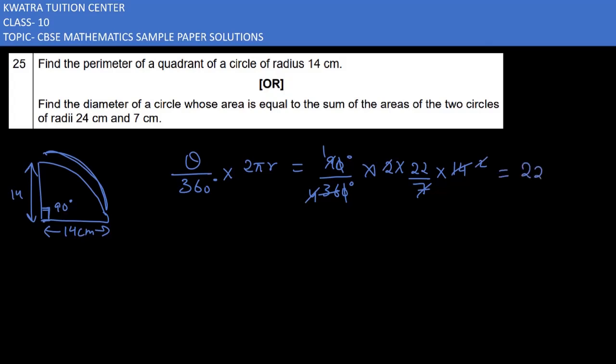So our arc length is 22 cm. To find the total perimeter, we add the arc length plus the two straight sides: 22 plus 14 plus 14. That gives 22 plus 28, which equals 50 cm.